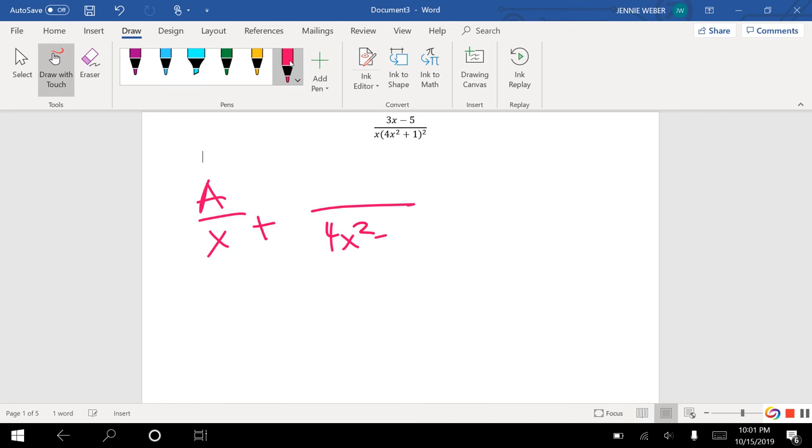But then here, I want to go over 4x plus 1 squared, and I want just the 4x plus 1. I was ahead of myself. And then I want the squared term because this is a repeated.